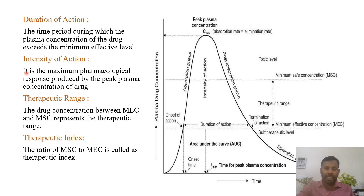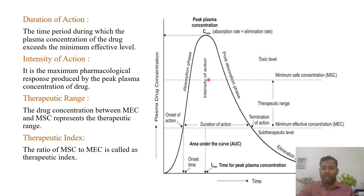Next, intensity of action: it is the maximum pharmacological response produced by Cmax, or peak plasma concentration. The maximum response given by Cmax is called intensity of action.